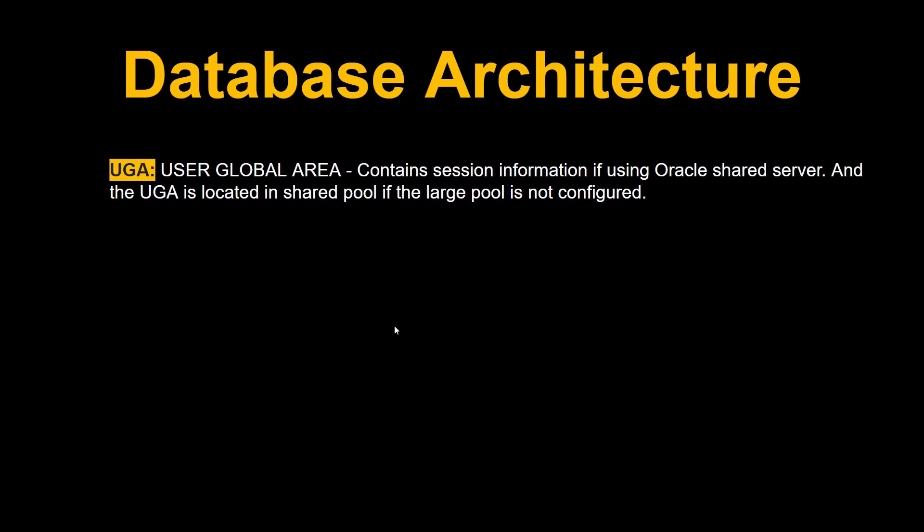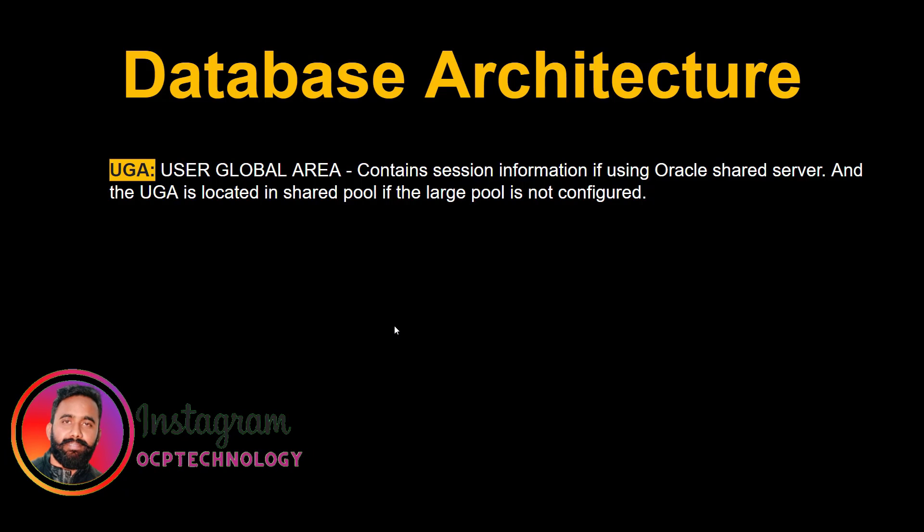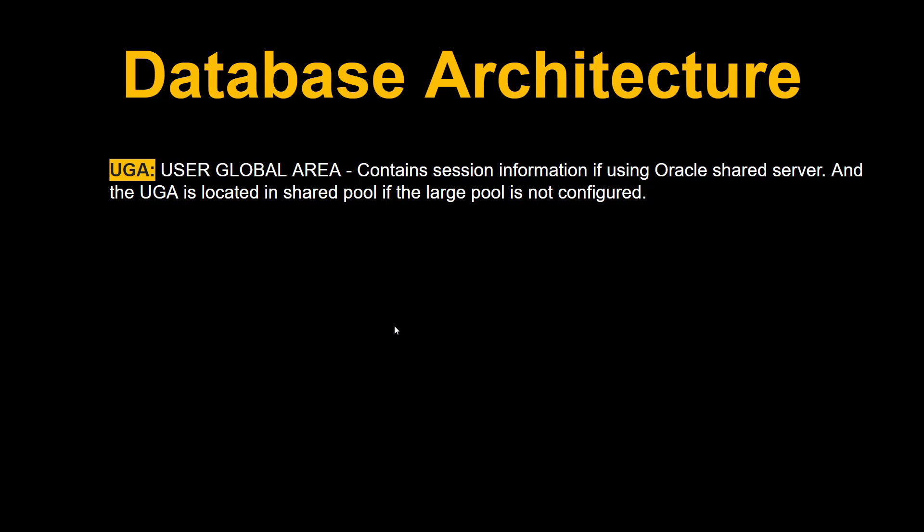Next, coming to the UGA — the User Global Area. The UGA contains session information when using an Oracle shared server. The UGA is located in the shared pool if the large pool is not configured. Remember this point: if the large pool is not configured, the UGA resides inside the shared pool.